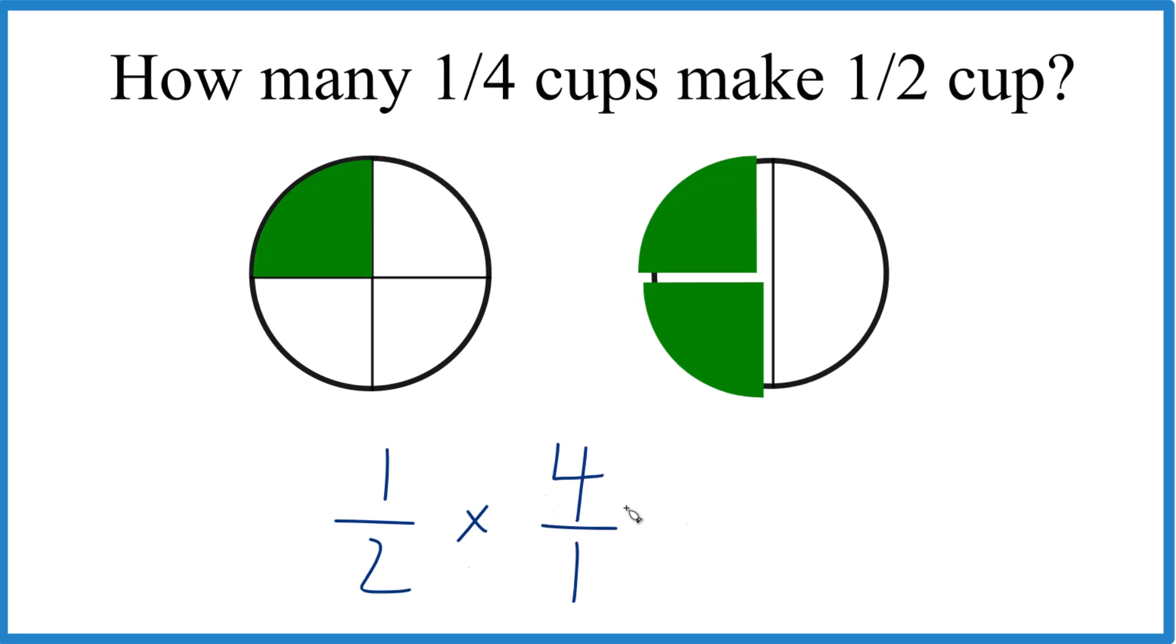Now we just multiply. One times four is four, two times one, that is two, and four divided by two is two. So we get the same answer.